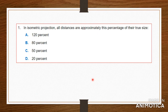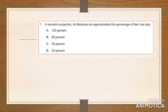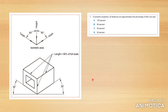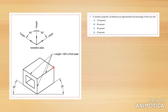In isometric drawing, number one: all distances are approximately this percentage of their true size. You have A — 120%, B — 80%, C — 50%, and D — 20%. If you look at this drawing, you can see that the lines going away from you — these are usually at 30 degrees for an isometric drawing — those lines are not full scale to a real object.